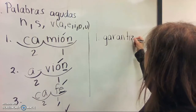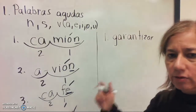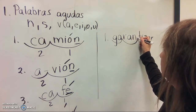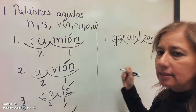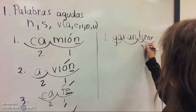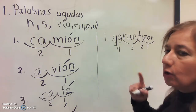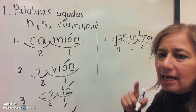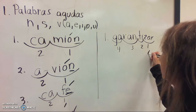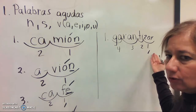Garantizar, which means 'to guarantee.' Let's divide this word into syllables: ga-ran-ti-zar — one, two, three, four syllables. Now listen — where is the stress? Garantizar. It's una palabra aguda because the stress goes on the last syllable.